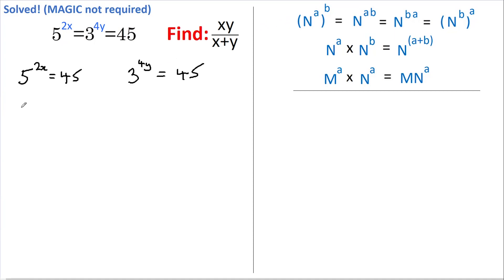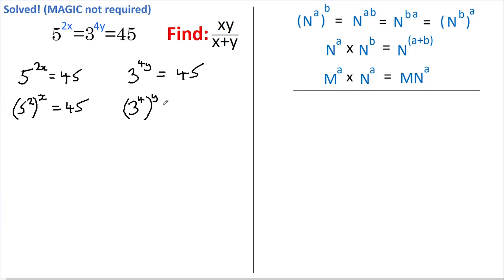So this becomes 5 to the power of 2, all raised to the power of x, and this equals 45. And over here we get 3 to the power of 4, all raised to the power of y, equals 45.